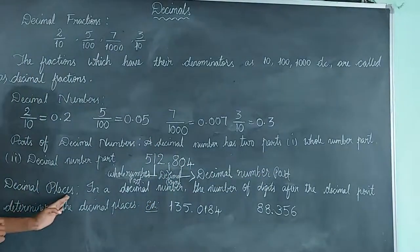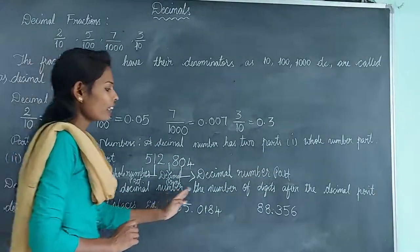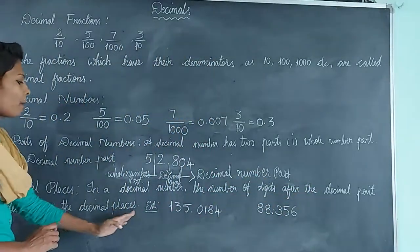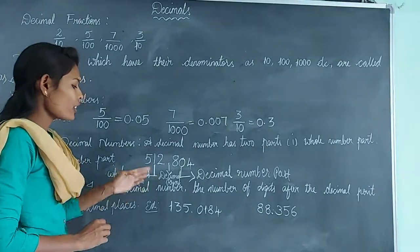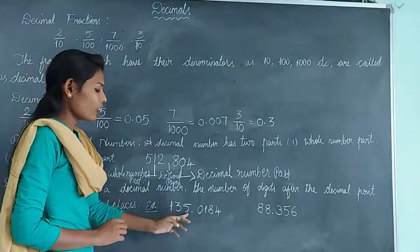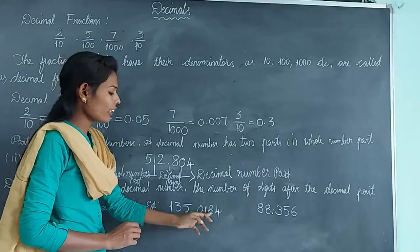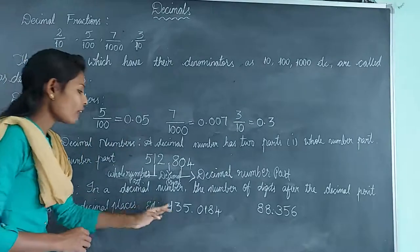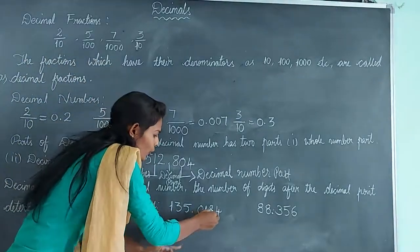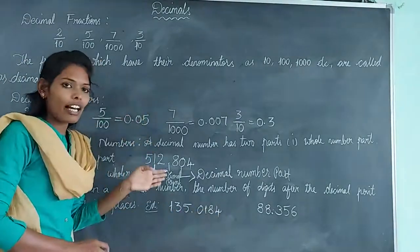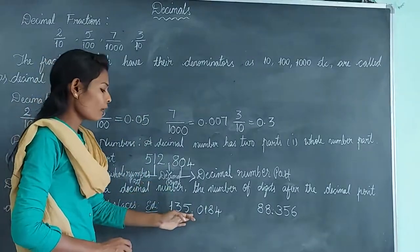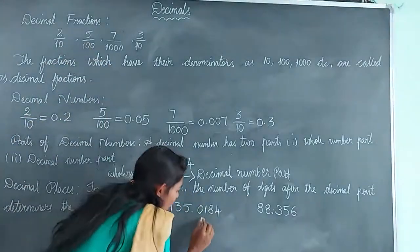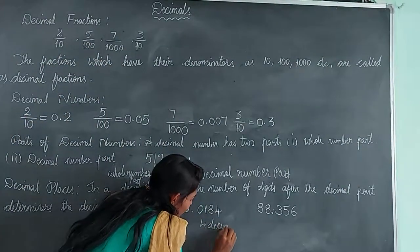Now let us know about decimal places. In a decimal number, the number of digits after the decimal point determines the decimal places. Here we have the decimal number 135.0184. How many digits are there after the decimal point? 1, 2, 3, 4. So the number 135.0184 has 4 decimal places.